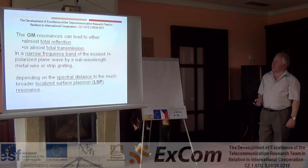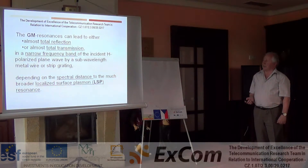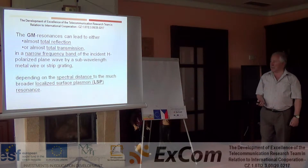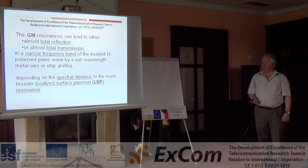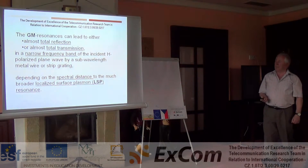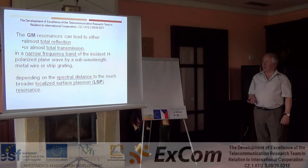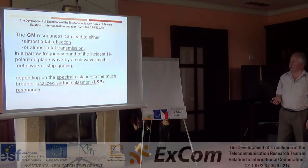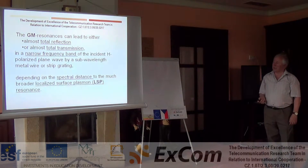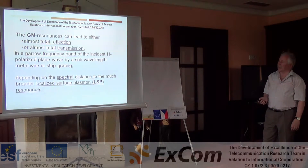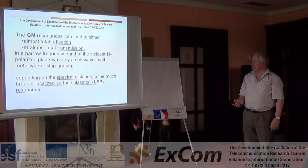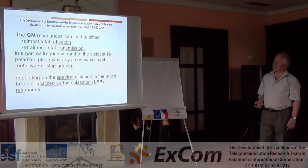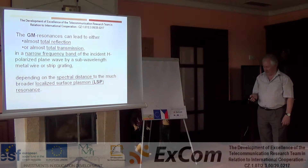The condition is that the incident H-polarized plane wave excites a sub-wavelength metal wire. This is essential if the wave is H-polarized, which is a condition for any plasmonic effects, as the electron plasma can be pushed forward and backward on the metal surface only when the electric field has a longitudinal component. This is why plasmonic effects work for H-polarized, or TM — transverse magnetic — polarized waves. This depends on the spectrum distance to the much broader classical localized surface plasmonic resonances.